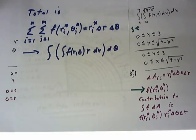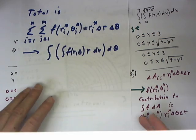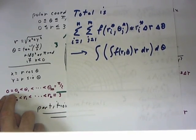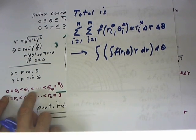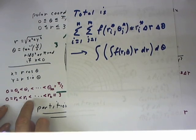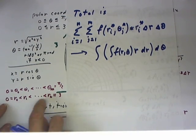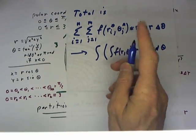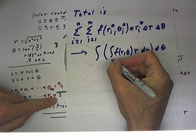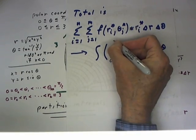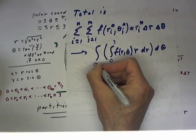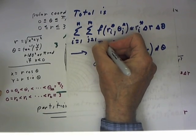What are the limits on the integrals? We just look back at our partition and see that we partitioned the interval from zero to pi over two for theta. We partitioned the r interval from zero to three, so that our r integral goes from zero to three, and our theta goes from zero to pi over two.